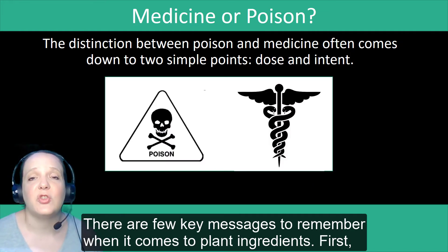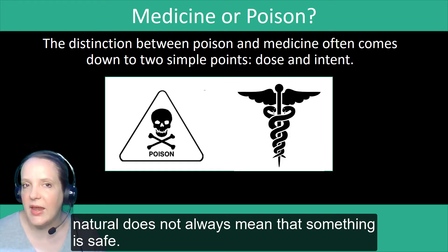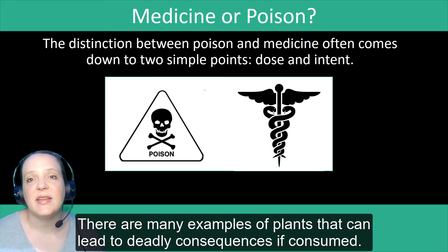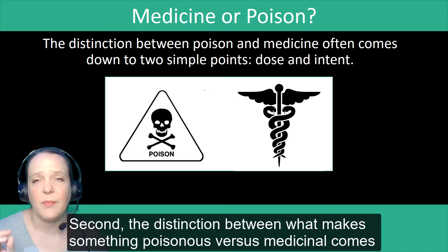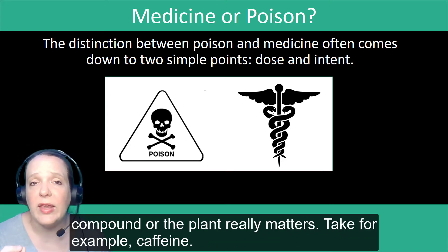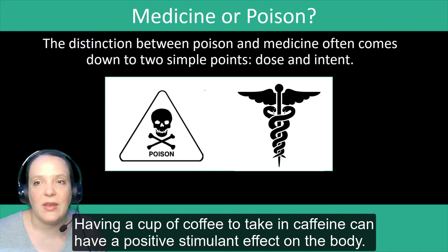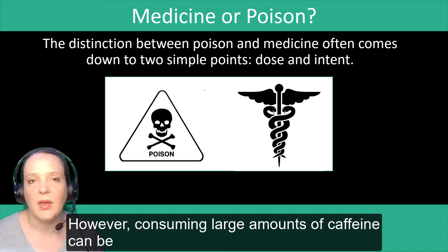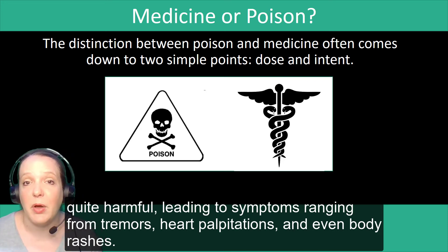There are a few key messages to remember when it comes to plant ingredients. First, natural does not always mean that something is safe — there are many examples of plants that can lead to deadly consequences if consumed. Second, the distinction between what makes something poisonous versus medicinal comes down to two things: dose and intent. The dose of the compound really matters. Take caffeine, for example. Having a cup of coffee can have a positive stimulant effect on the body. However, consuming large amounts of caffeine can actually be quite harmful, leading to symptoms ranging from tremors and heart palpitations to even body rashes.